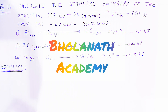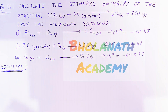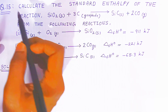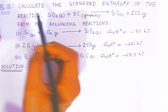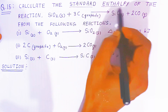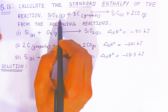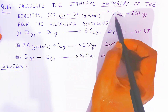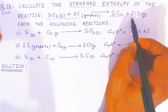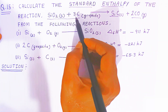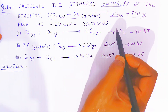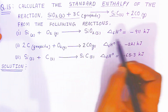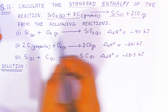Hello students, once again welcome to Bolanath Academy. In this video we are going to see question number 14. You have to calculate the standard enthalpy of the reaction where silicon oxide reacts with carbon, forming silicon carbide and carbon monoxide. From the following reactions, when the enthalpies of these three reactions are given.